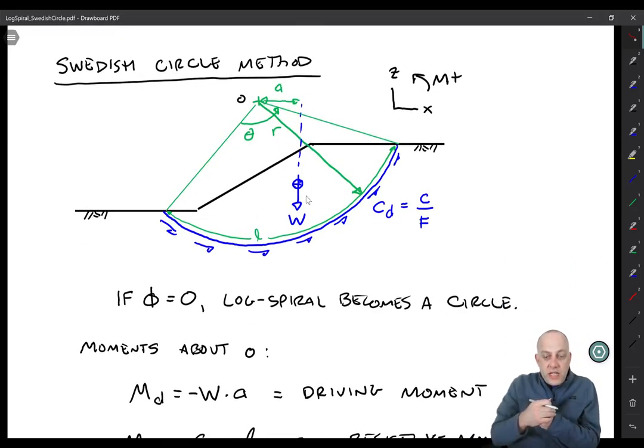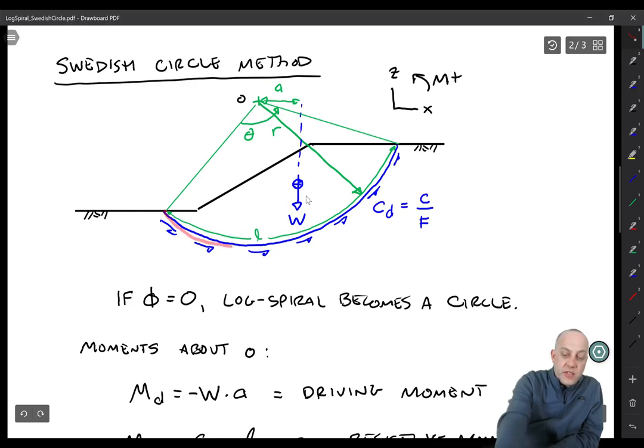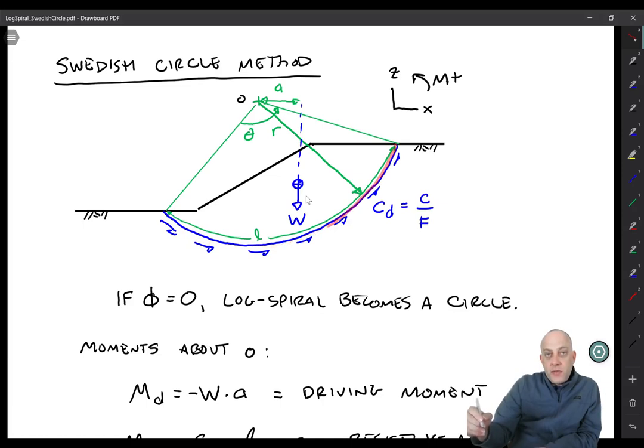So the Swedish circle method is actually a subset of the log spiral method for phi equals zero. And the arc length is now just a circle with a constant radius instead of being a log spiral. So for this one, we will actually go through and formulate the equation for the factor of safety.